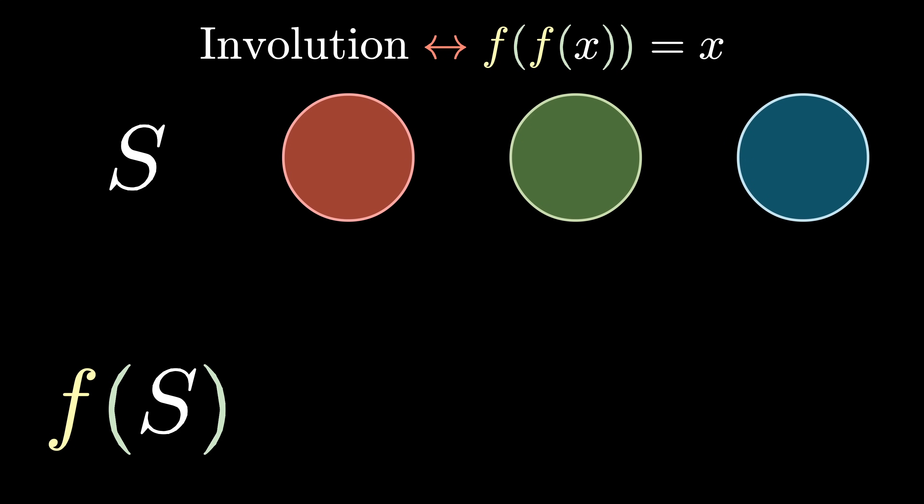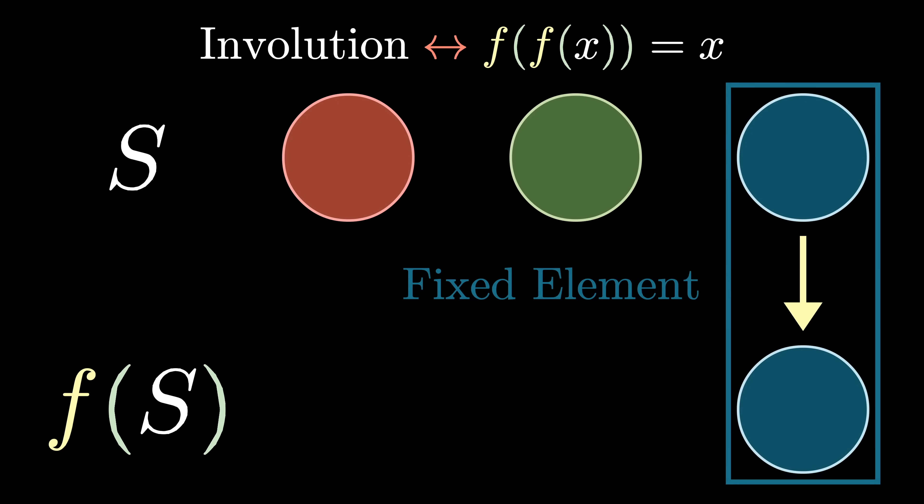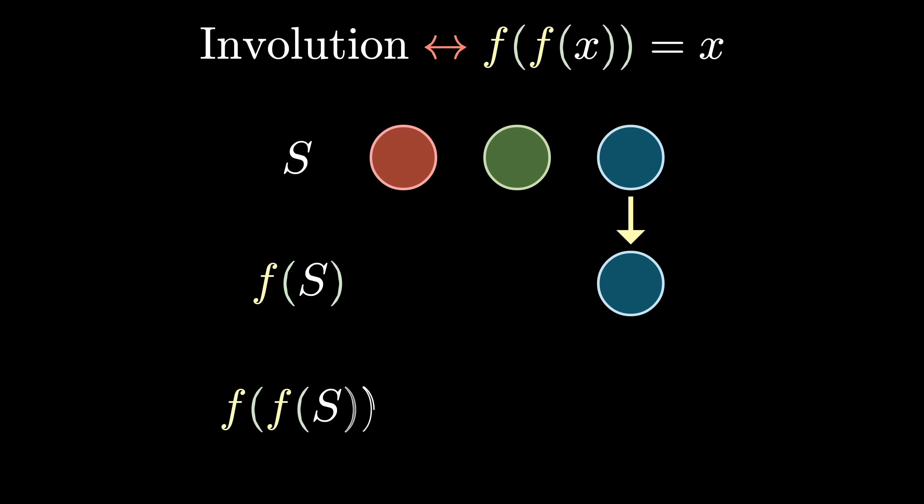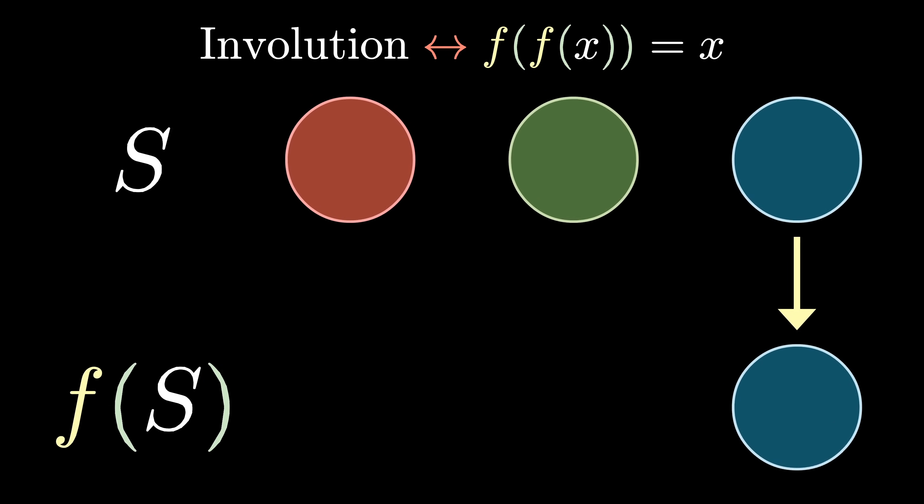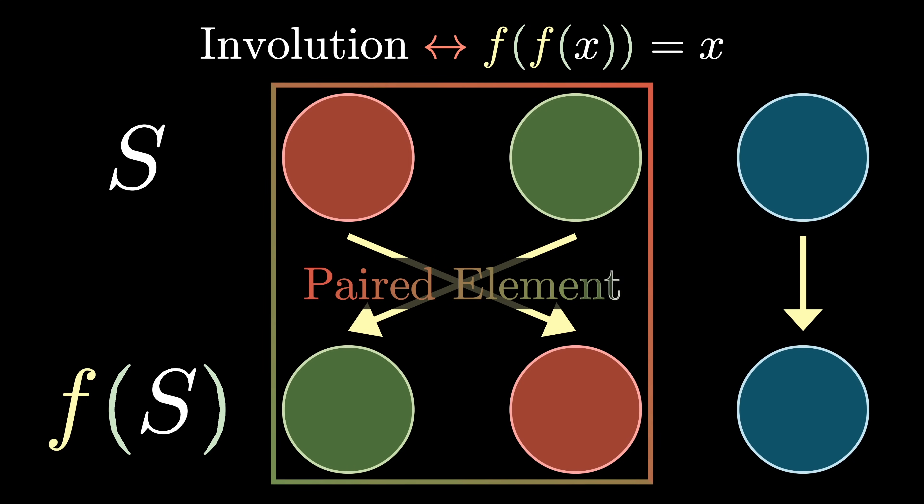Let's head back to the set of colored balls S and try to construct an involution. One way to make an element map to itself after two applications is to just map it to itself. We call these fixed elements. But what about the elements that don't map to themselves? The only way this is possible is if those two elements map to each other, and so the elements that don't map to each other come in pairs. We call them paired elements.